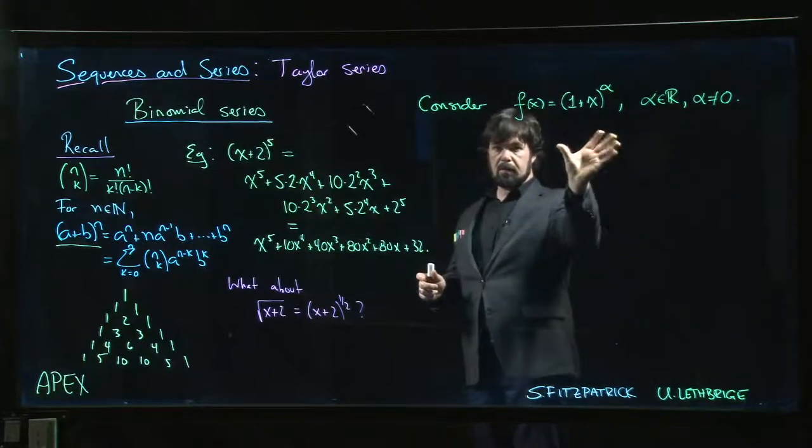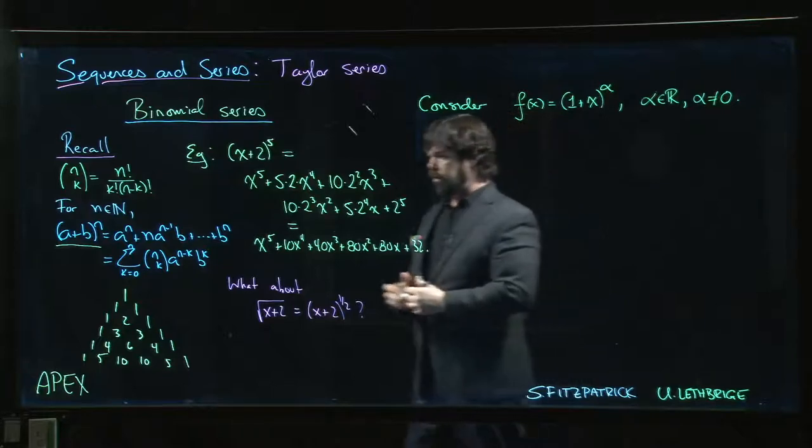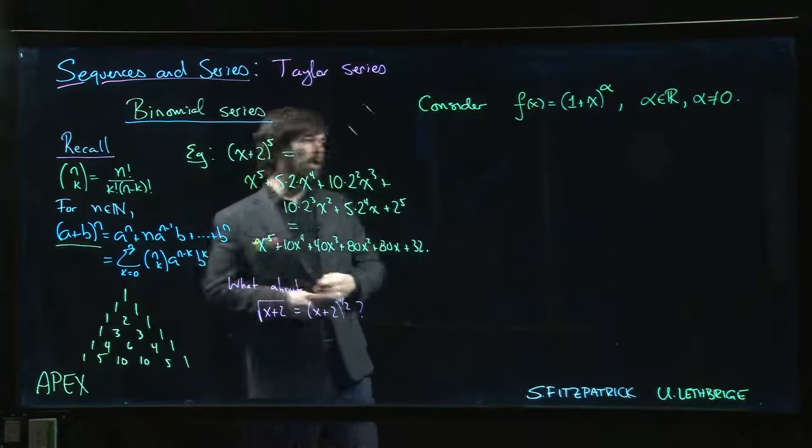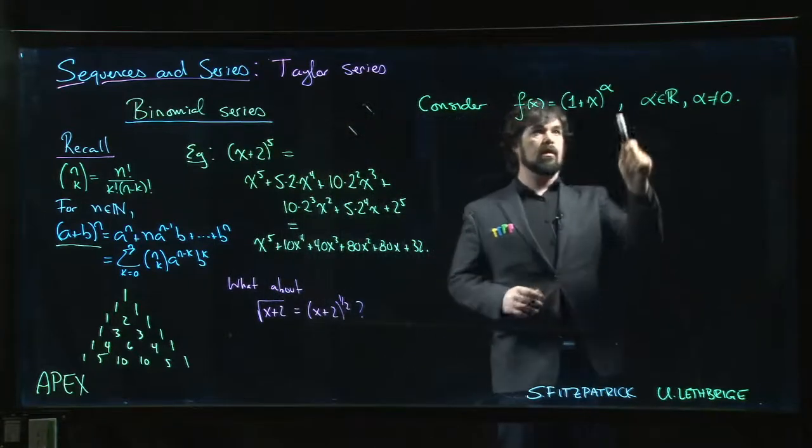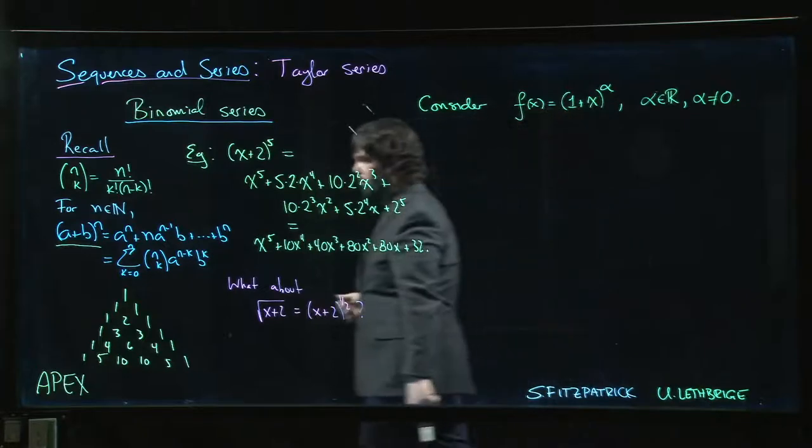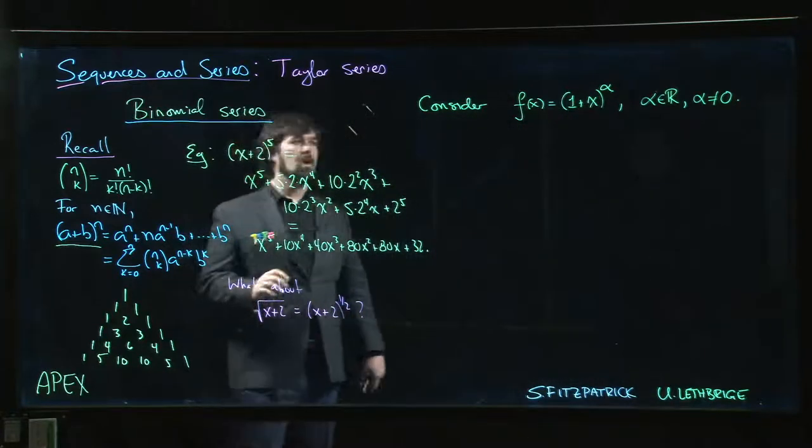All right, so now we're going to look at the binomial series. The difference between what we have here and what we have here is that we are now going to allow the exponent to be any nonzero real number. That's the only restriction—alpha can't be zero.